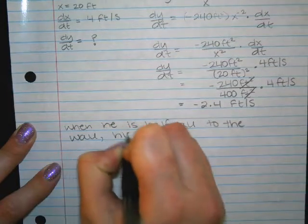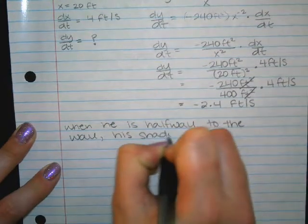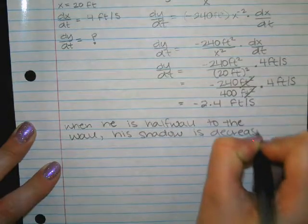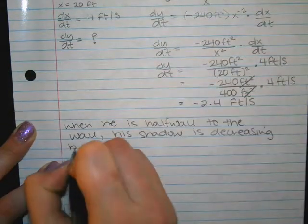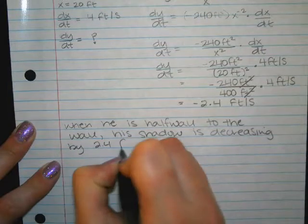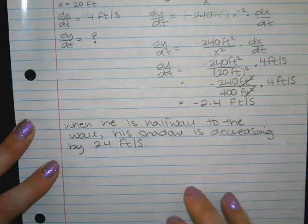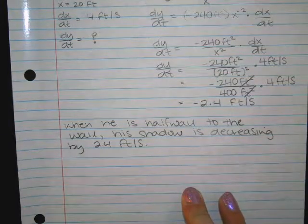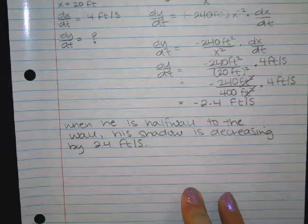Okay, so let's go ahead and write the sentence. When he is halfway to the wall, his shadow is decreasing by 2.4 feet per second.